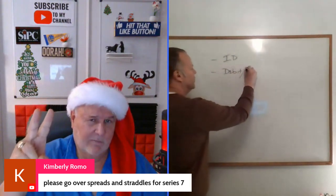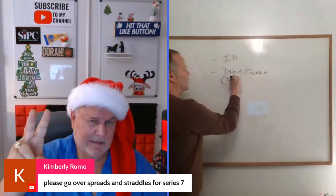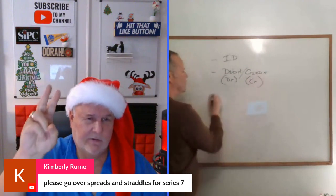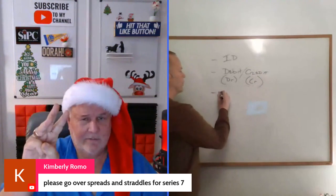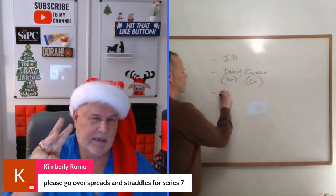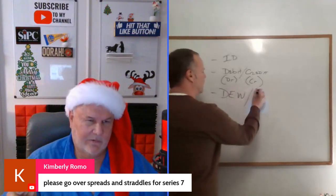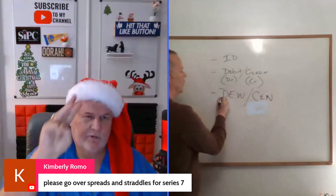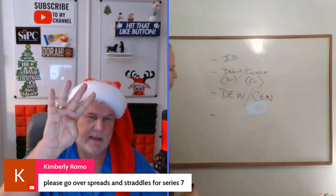Do you have more money out than in, or more money in than out? Test question number three: do you want the contracts to exercise or expire — are you going to be a happy camper if the contracts are exercised or they expire? Test question number four: do you want the contracts to widen or narrow?